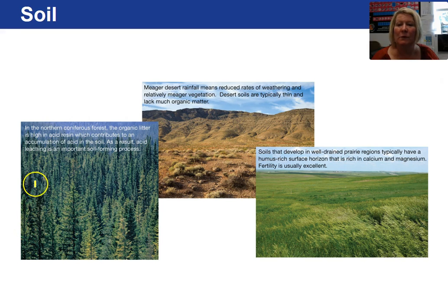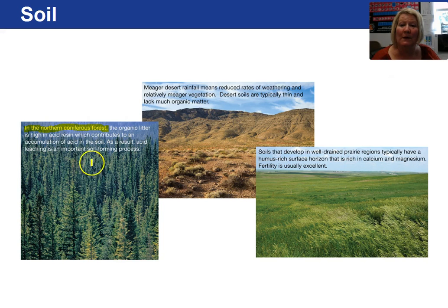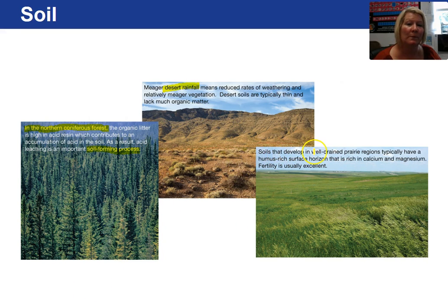Looking at different areas and soil formation: in a northern coniferous forest, due to the type of tree there is a high acid content which accumulates in the soil and helps break down material more quickly, adding to the soil forming process. Very little soil accumulates in the desert — there simply isn't enough water, therefore there is very little vegetation. An excellent location for soil formation would be in a well-drained prairie area where you have humus-rich surface materials, and the fertility of this type of soil is excellent.